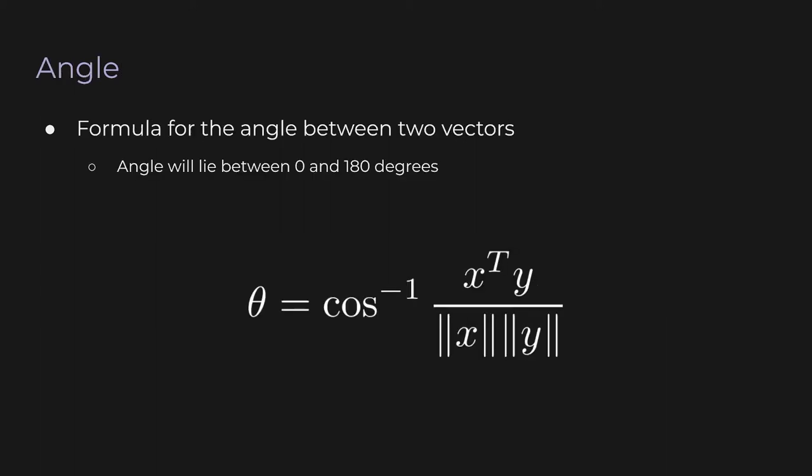The next property is the angle between two vectors. There's a simple formula: the angle is the inverse cosine of a fraction where the numerator is the dot product of x and y, and the denominator is the norm of x times the norm of y. The inverse cosine has a range between 0 and 180 degrees. Two arrows can line up perfectly (angle 0), be completely opposite (angle 180), or be perpendicular (angle 90). Going past 180 winds back around, so it makes sense to use inverse cosine.